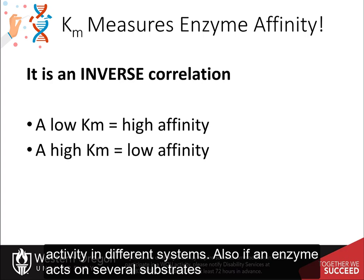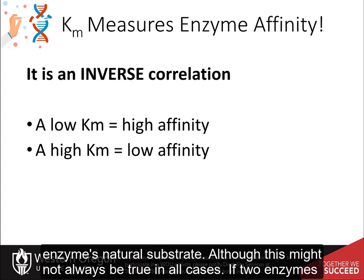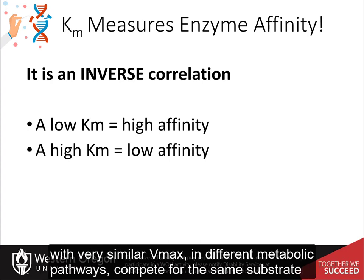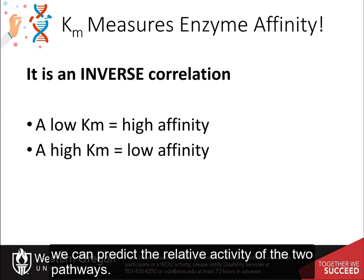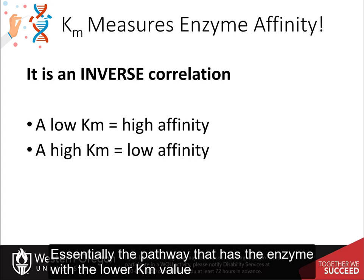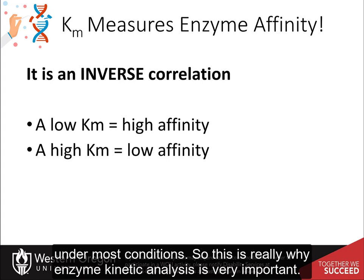The rate of formation of product will depend on the availability of the substrate. This is one way that we can control enzyme activity in different systems. Also, if an enzyme acts on several substrates, typically the substrate with the lowest Km value is assumed to be the enzyme's natural substrate. If two enzymes with very similar Vmax values in different metabolic pathways compete for the same substrate, and we know the Km values for the two enzymes, we can predict the relative activity of the two pathways. The pathway with the enzyme having the lower Km value is likely to be the preferred pathway, and more substrate will flow through that pathway under most conditions.